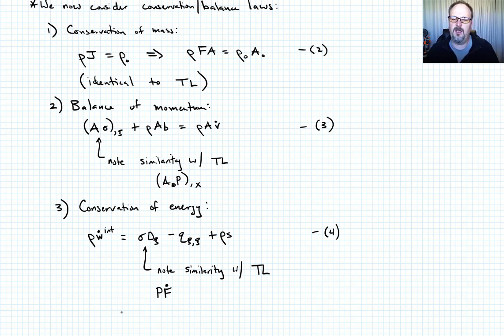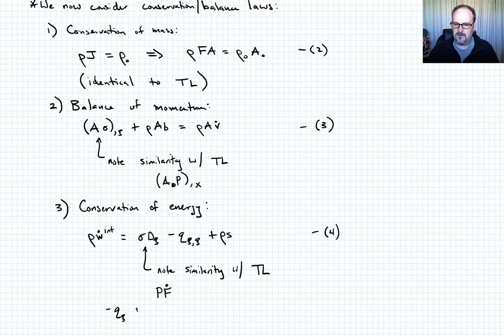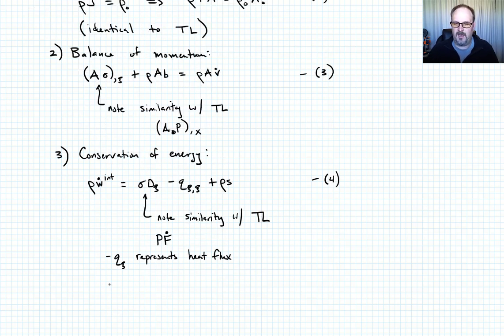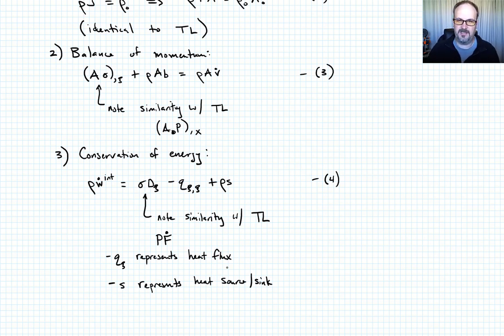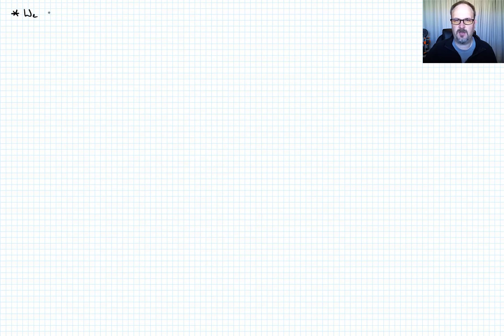To define the terms: q_c represents the heat flux, and the s term represents a heat source or sink. Those are our balance and conservation equations.